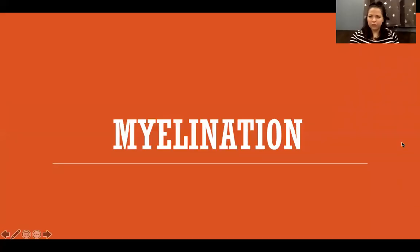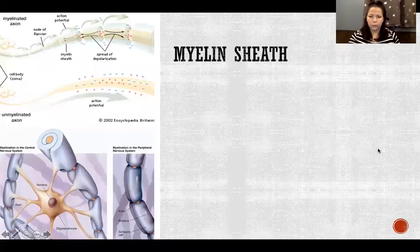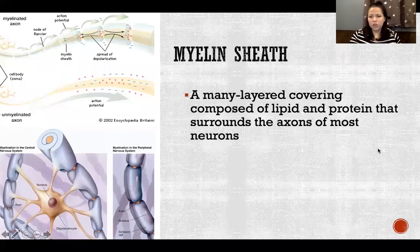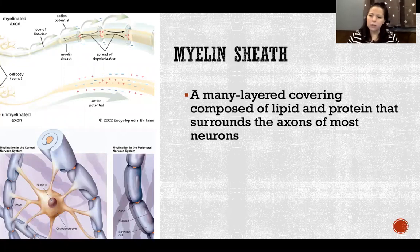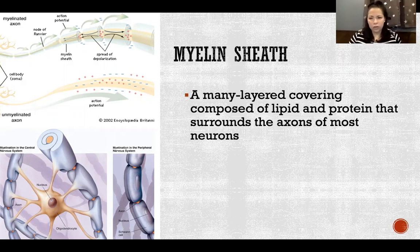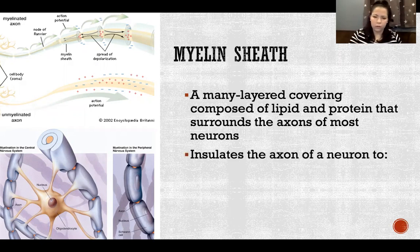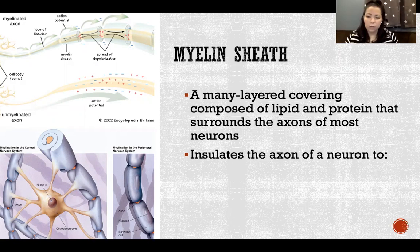In this video I'm going to talk about myelination. A myelin sheath is a many-layered covering composed of lipid and protein that surrounds the axons of most neurons. The myelin sheath acts as insulation of the wires of the nervous system — and when I say wires, I'm talking about the axons of the neurons.